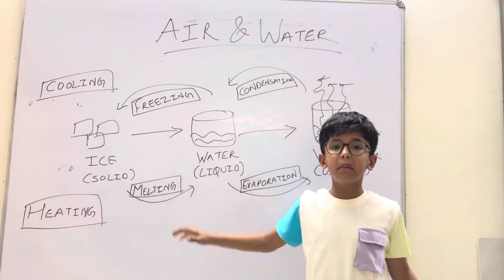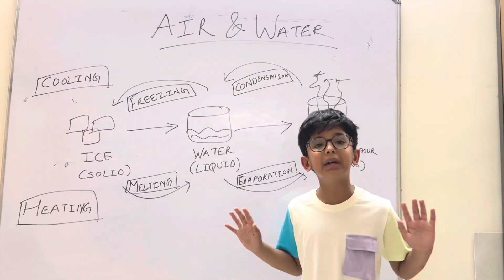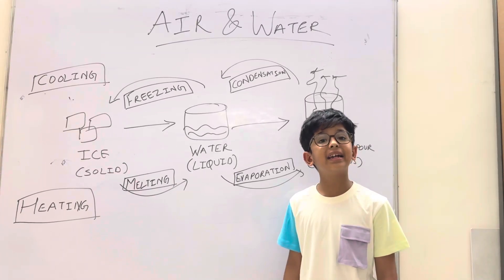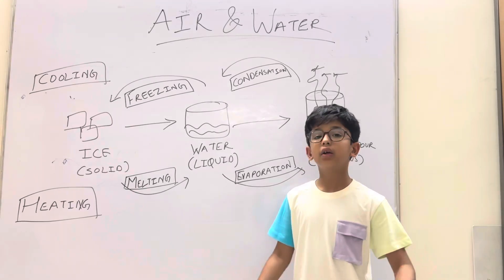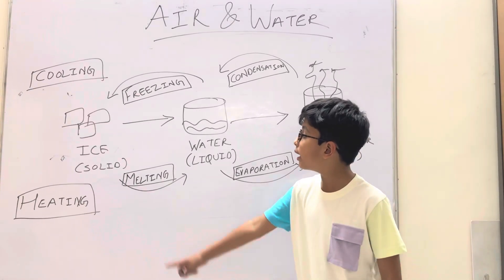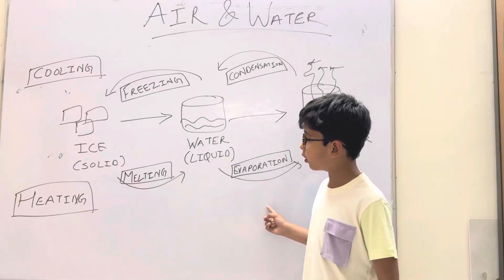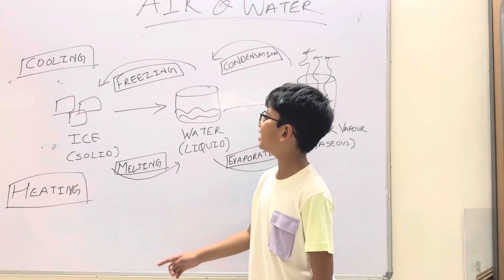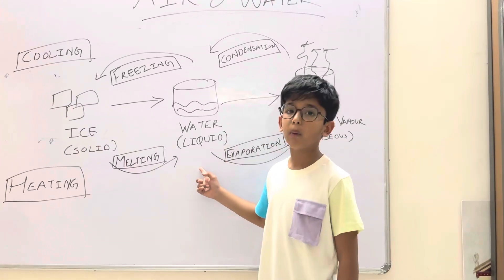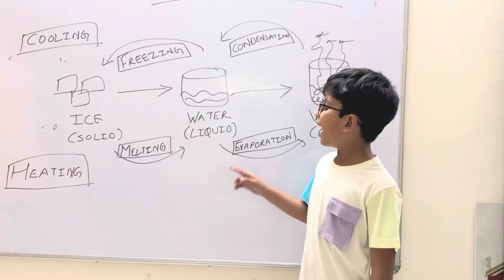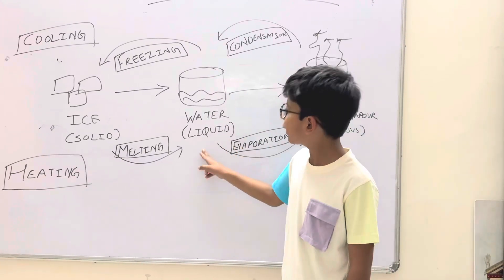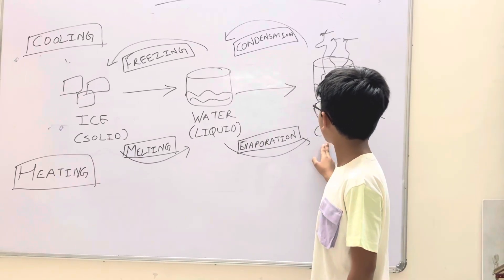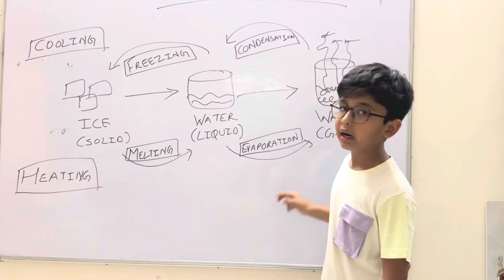As you can see on the board, this is a very simple chart showing how water changes its forms by heating and cooling. The two processes of heating are melting and evaporation. In melting, the solid form of water — ice — changes into the liquid form of water. In evaporation, the liquid form of water changes into the gaseous form — water vapor.